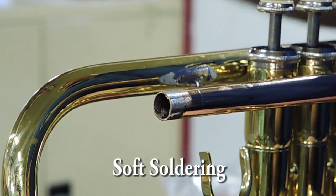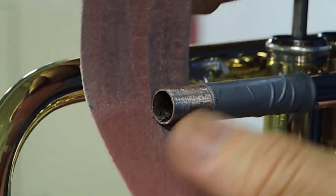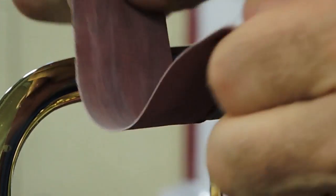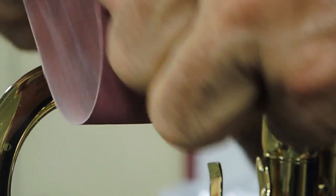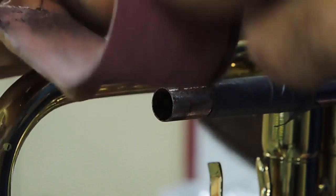Today we're doing soft solder. Now soft solders are usually tin and lead mixtures, alloys, but they're called soft solder because they've got a low melting point.